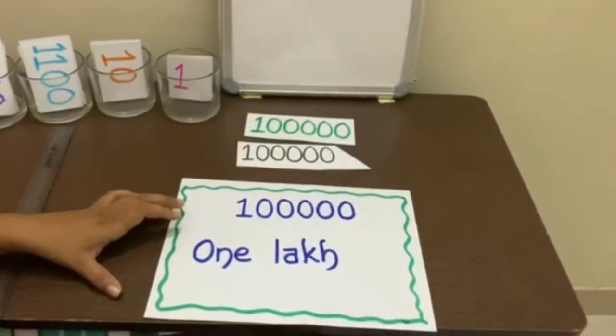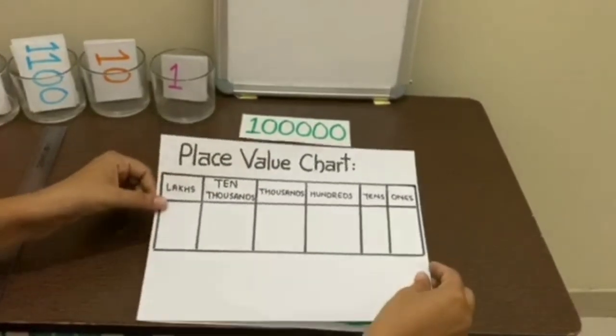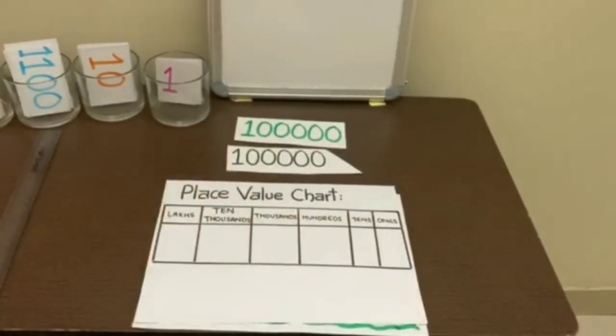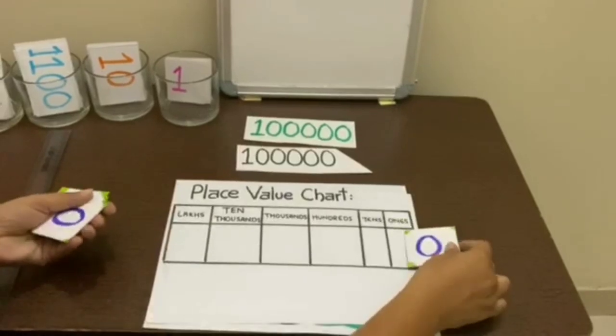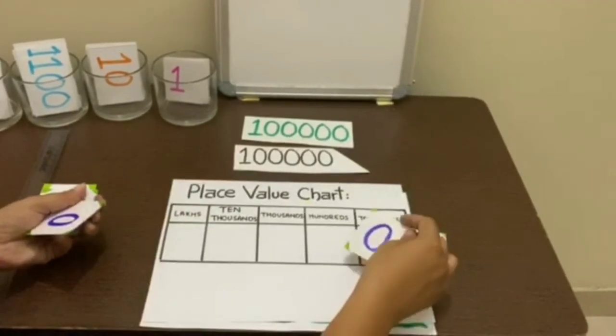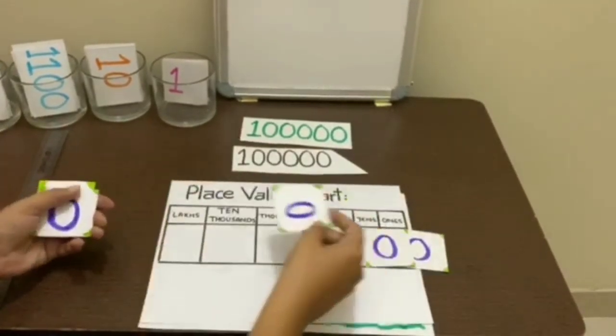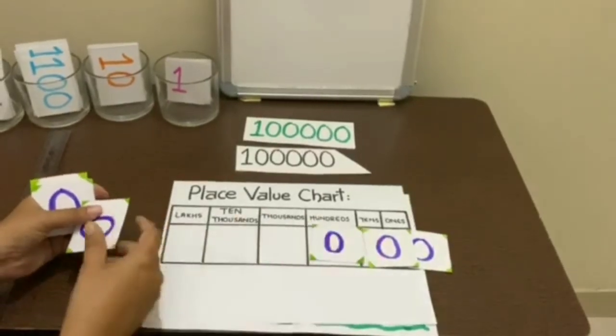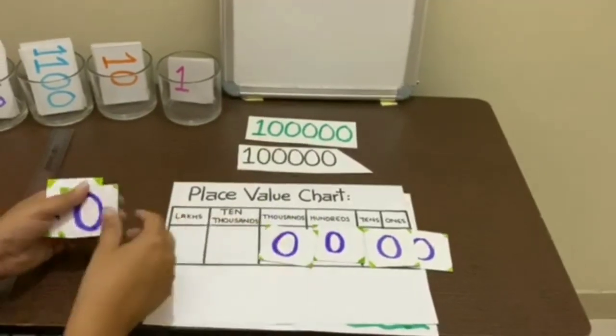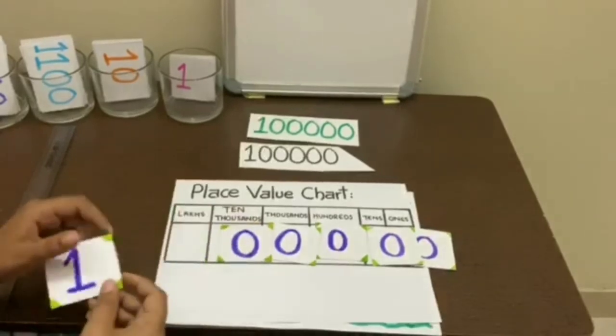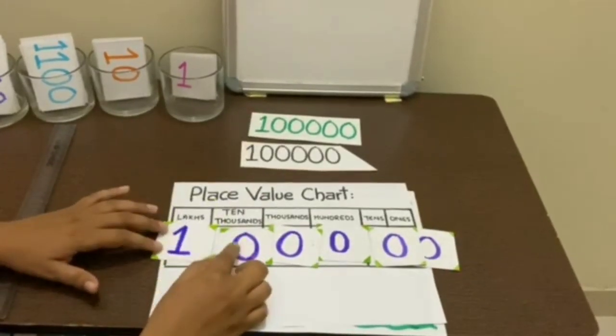If we display it on a place value chart, it is 0 at ones place, 0 at tens place, 0 at hundreds place, 0 at thousands place, 0 at ten-thousands, and 1 at lakhs place.